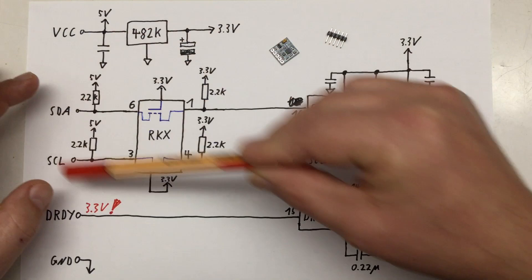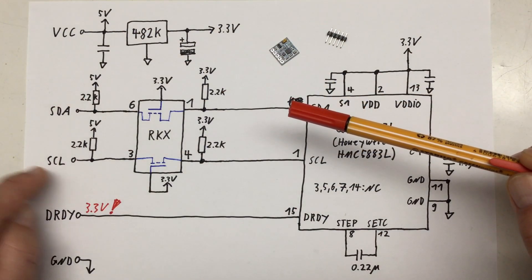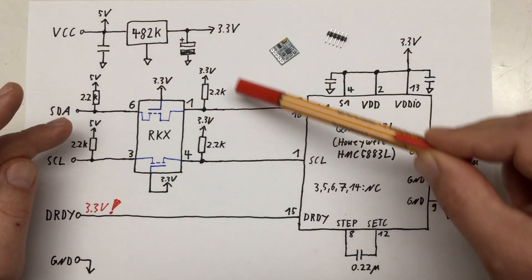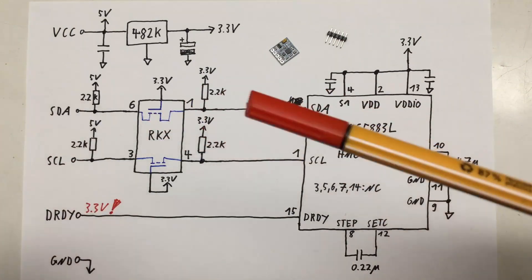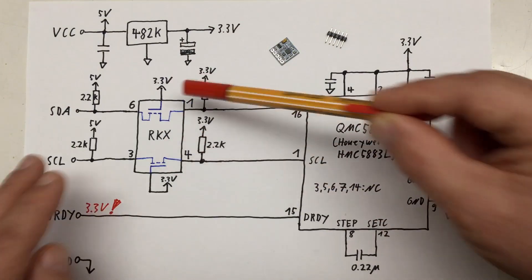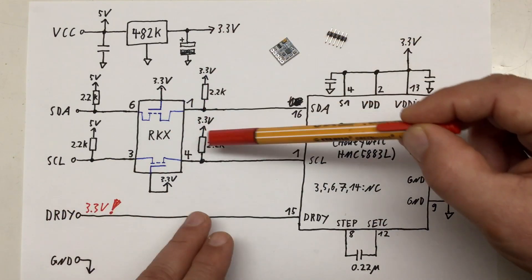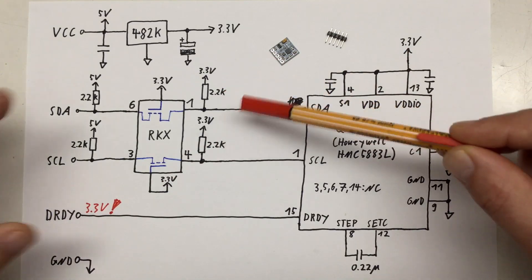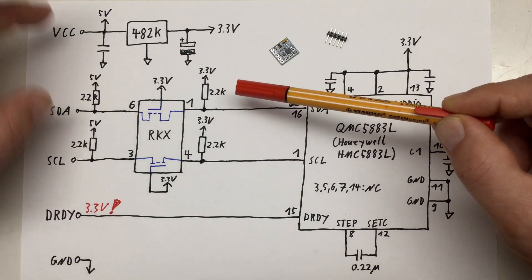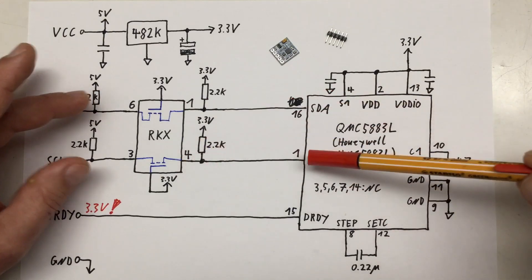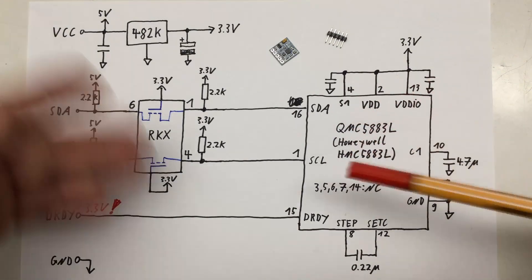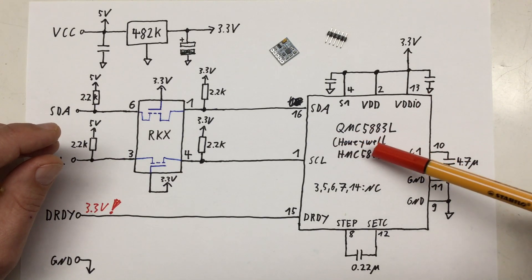Then we have the level shifting section for I2C. So SDA and SCL come in and are pulled up via 2.2K resistors to our 5-volt rail. Then they go into this mystery chip, the RKX, which probably just contains two MOSFETs with the gates pulled to the 3.3-volt rail. And the outputs are pulled up again to the 3.3-volt rail via 2.2K resistors. And that's actually doing a bidirectional level shifting between 3.3 volts and 5 volts. These go into pins 1 and 16, so SDA and SCL of our QMC 5883L.